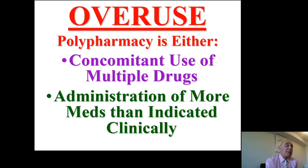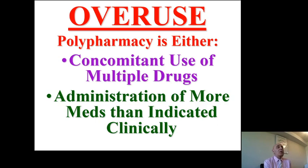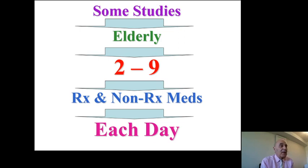Polypharmacy involves either the concomitant use of multiple drugs or the administration of more medication than indicated or clinically required. In one study, some elderly were using 2 to 9 medications including prescription and non-prescription drugs. Practically speaking, many patients are on 15 to 20 medications per day.